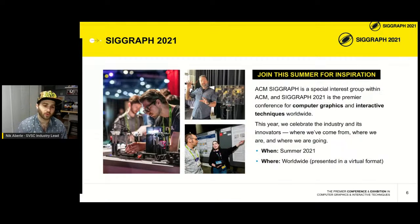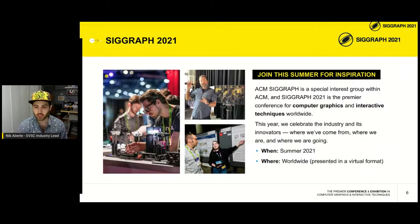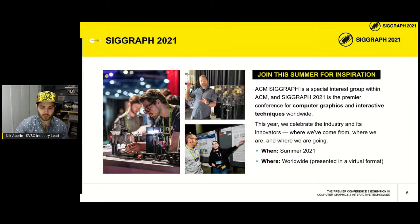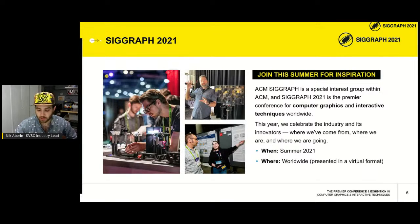ACM SIGGRAPH is a special interest group within the greater ACM organization. SIGGRAPH 2021 is the premier conference for computer graphics and interactive techniques worldwide. It takes place in summer 2021 in a worldwide virtual format, so it doesn't matter where you are — you can engage and participate in the conference.